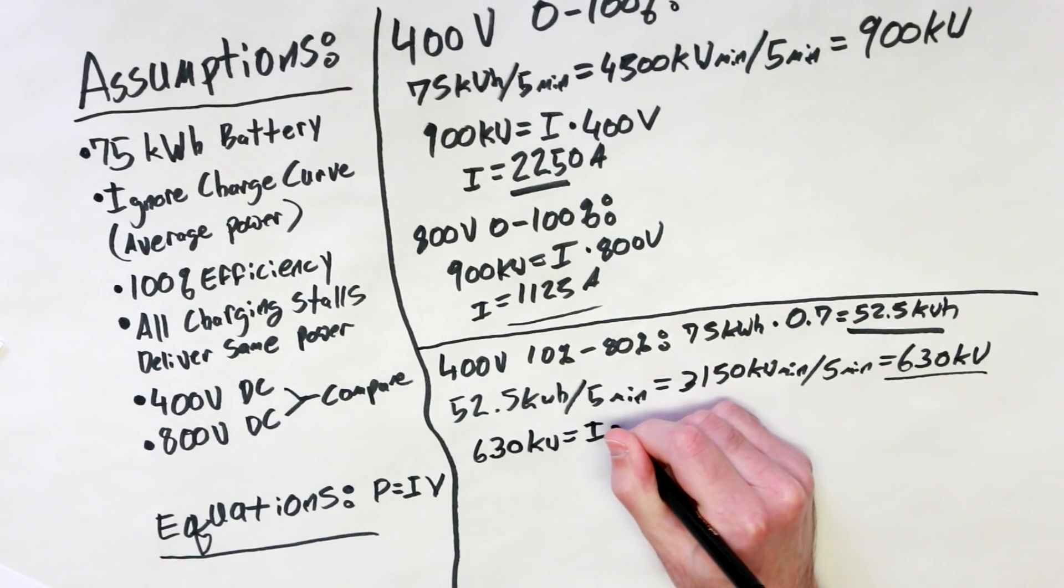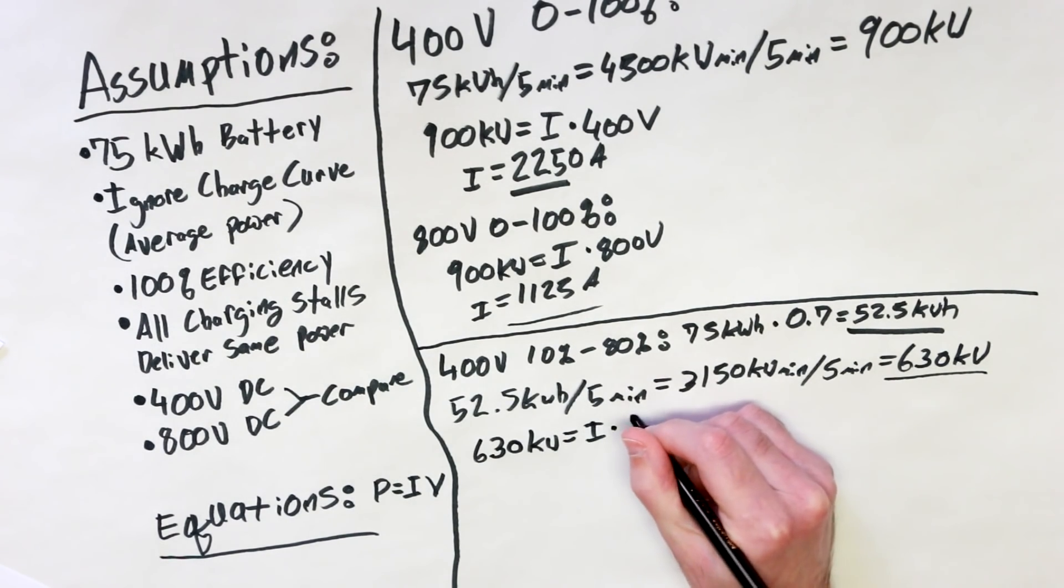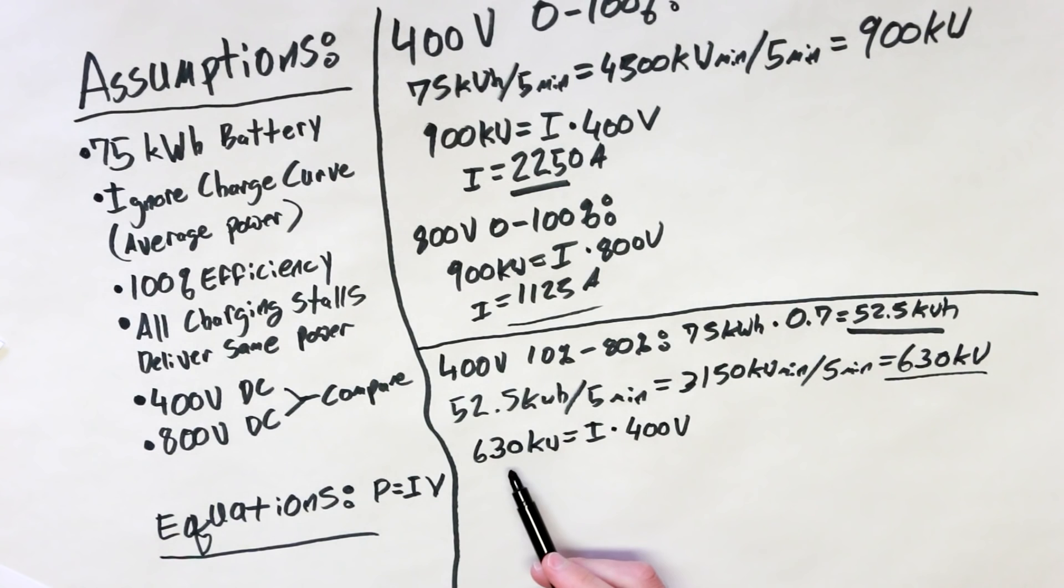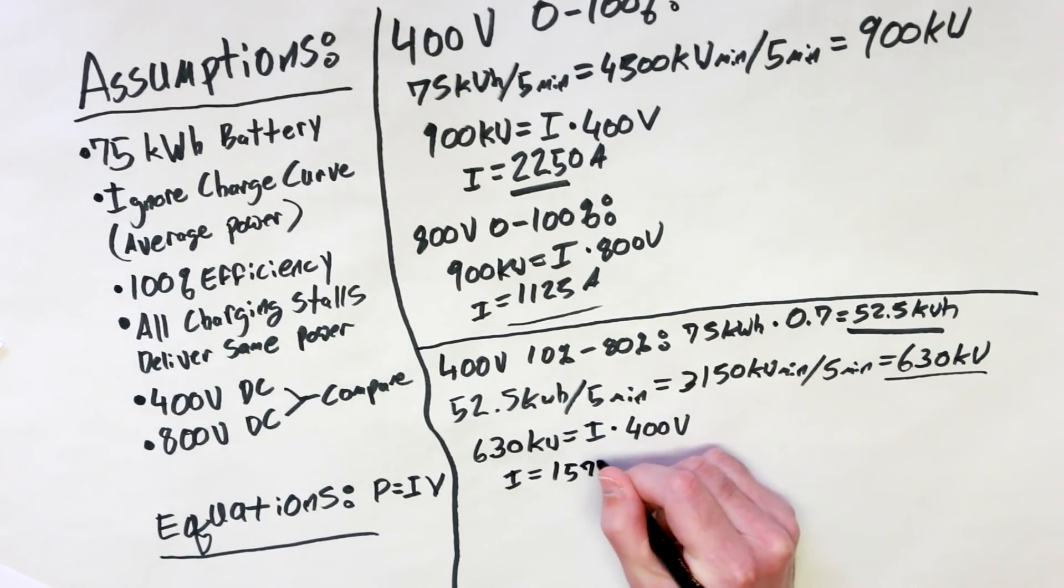That is still a tremendous amount of power to deliver to a car. But, let's see where that puts us in terms of current. So, again, like last time, we have 630 kilowatts, and we want to find out how much current we need to drive. So, 630 kilowatts times I times 400 volts. So, this time we're not dealing with 900 kilowatts here, we've got 630. So, 630,000 divided by 400 gives us I equals 1575 amps. That's still a crazy amount of current, but it's still more reasonable than where we were just a moment ago.